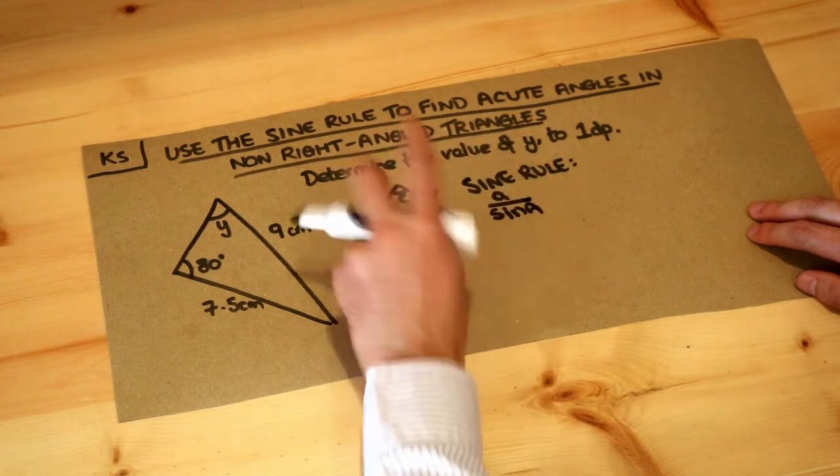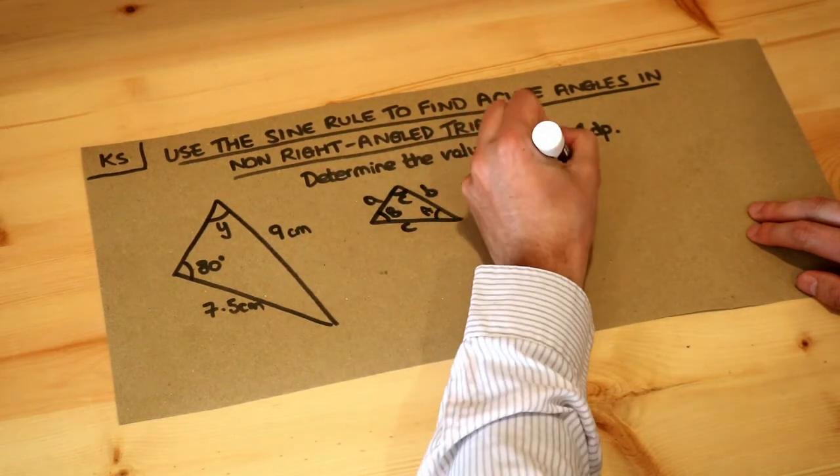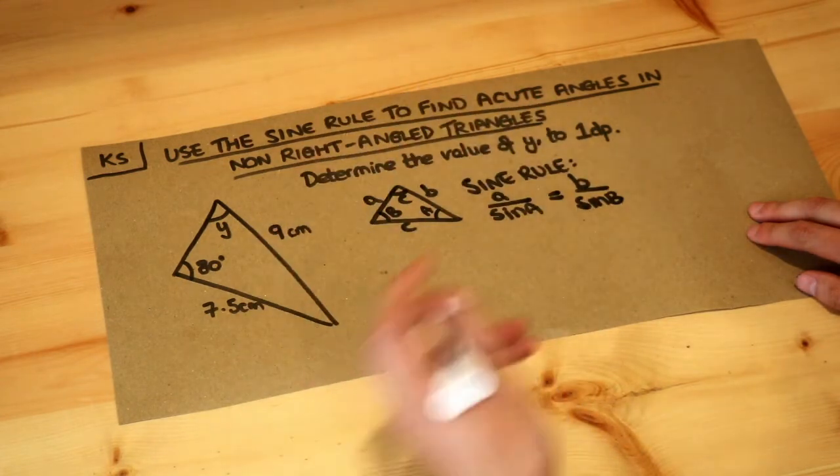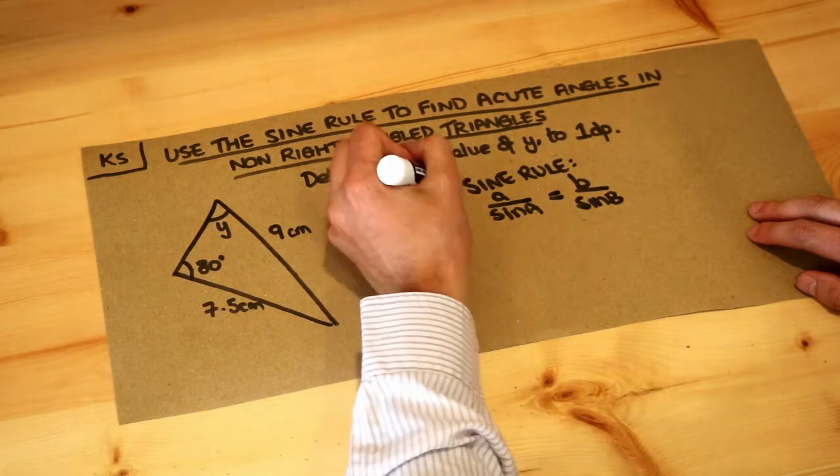Then the sine rule was this: if you take any side like a for example and divide it by sine of its opposite angle, that always remains the same. So that would be the same as b over sine B, and that would also be the same as c over sine C.